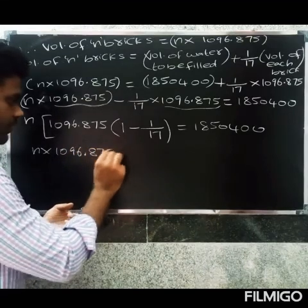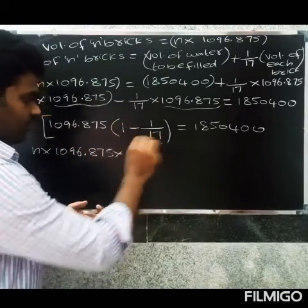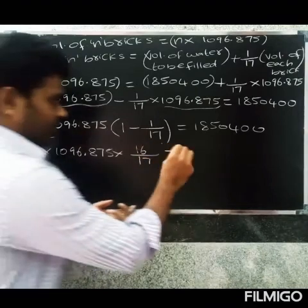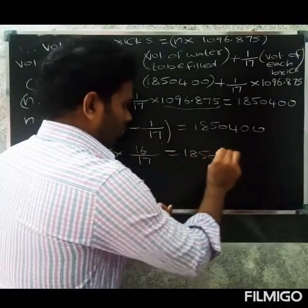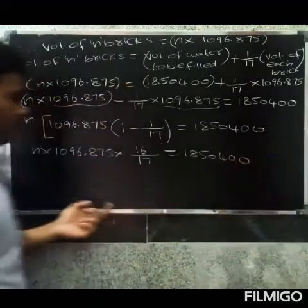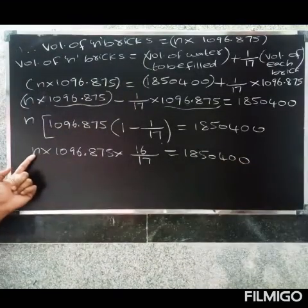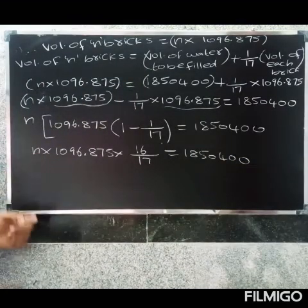The LCM is 17, so 17 minus 1 is 16 by 17, which equals 1,850,400.